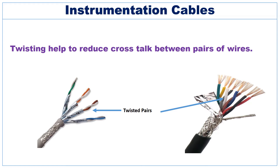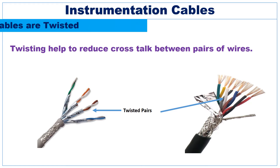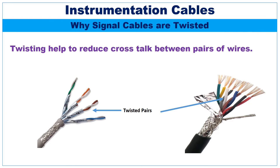Signal cables are also twisted. Twisting helps to reduce the crosstalk between pairs of wires — two insulated wires are twisted around each other to reduce crosstalk. Most paired cables are twisted pair cables.